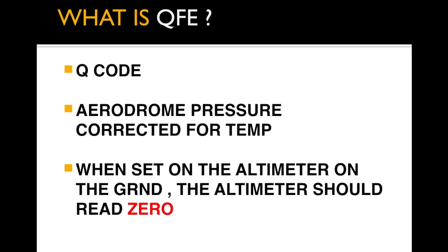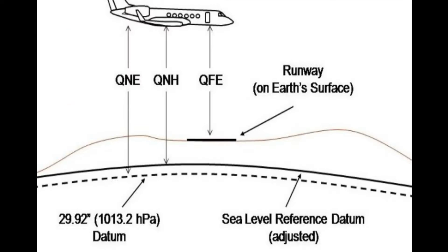Now coming on to QFV. QFV is a Q code — again aerodrome pressure corrected for temperature. So whenever you are going to feed QFV on your altimeter, the altimeter should read zero when the aircraft is on the ground. We'll explain this with the help of a simple diagram.